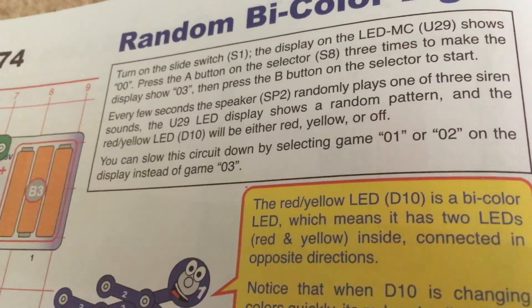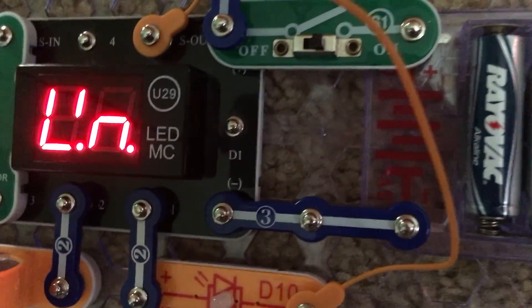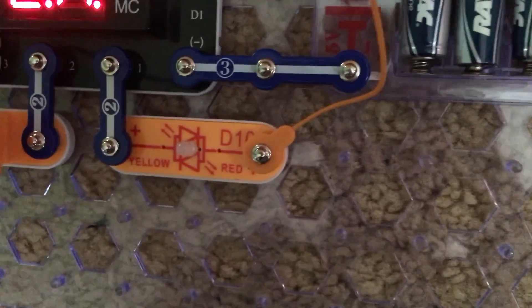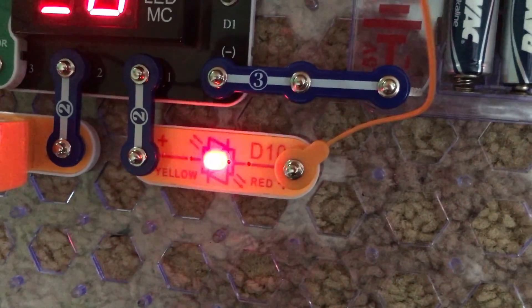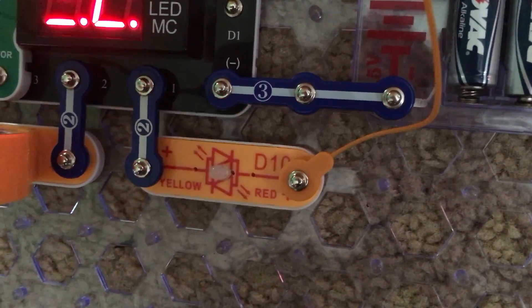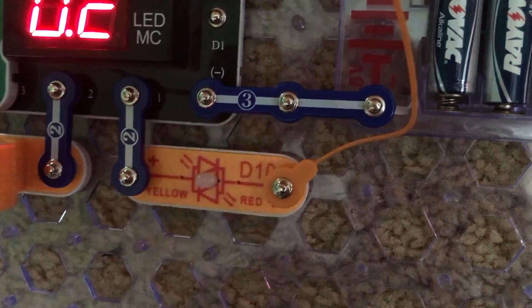Now every few seconds the speaker will make one of three different sounds. The pattern on the U29 display will change and so will the color of the bicolor LED. It will either be red, yellow, or off.